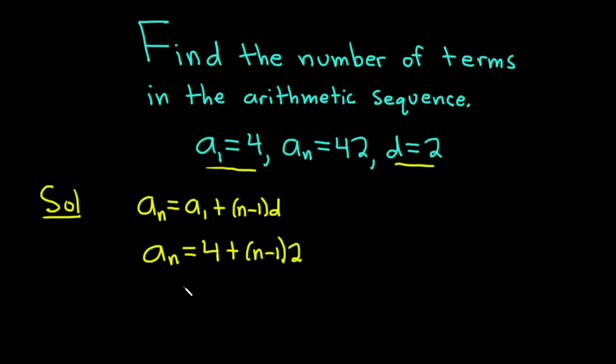Now let's just clean this up. So we have a sub n is equal to 4, and we can distribute the 2. 2 times n is 2n and 2 times negative 1 is negative 2. So we have a sub n is equal to 4 minus 2 is 2, and then we have the 2n.